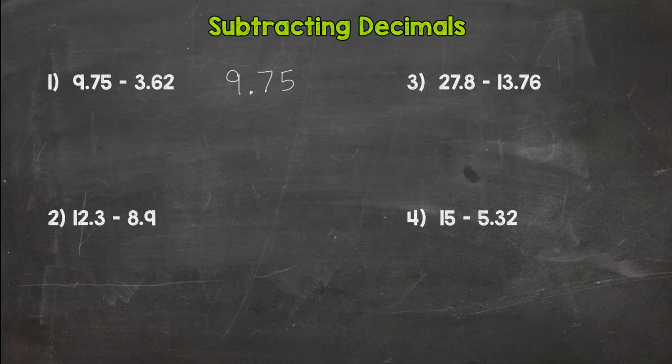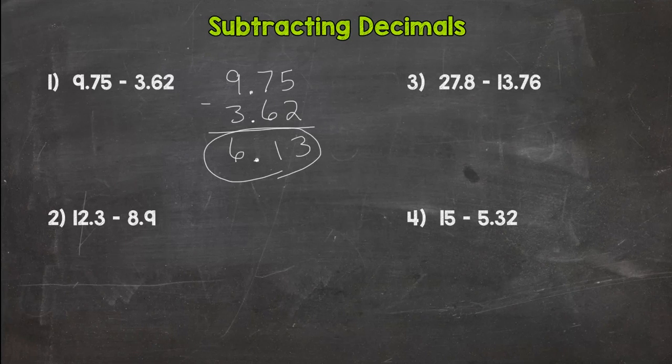The first thing we do when we subtract decimals is we line our decimals up. Once we have our decimals lined up, we see if we need any placeholder zeros. In this problem we don't. Now all we need to do is subtract. Five minus two is three, seven minus six is one. When we subtract decimals, just like adding decimals, we bring our decimal straight down. Nine minus three is six, so our answer is 6.13.